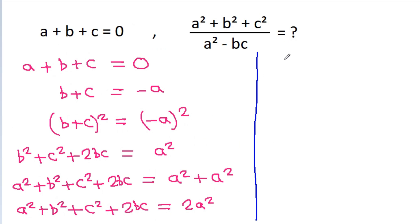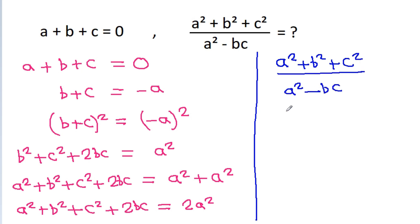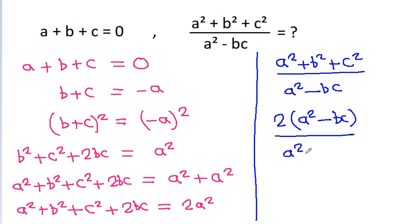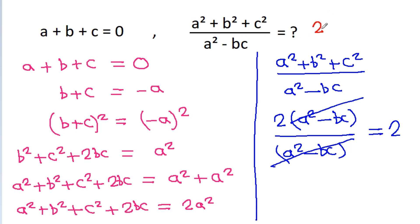We have to find the value of a square plus b square plus c square by a square minus bc. Substituting, we get 2 times a square minus bc divided by a square minus bc. The a square minus bc cancels, and we get 2. So this is equal to 2.